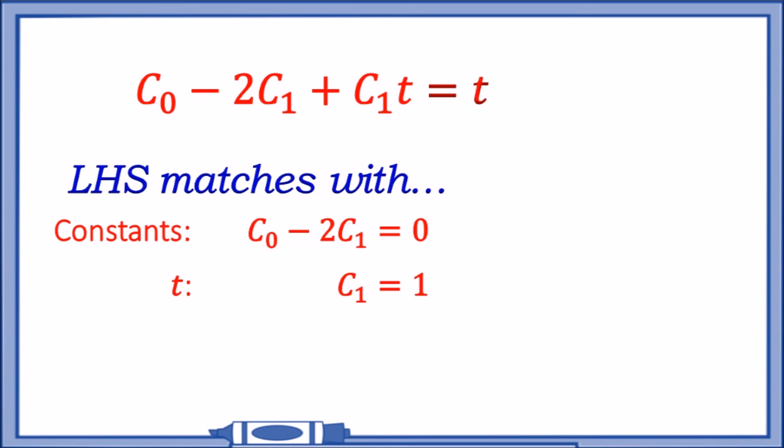Therefore we have our two sets of simultaneous equations: C₀ - 2C₁ = 0 and C₁ = 1. Solving this, we already know C₁ = 1. Substituting back to the first equation, it's going to yield C₀ = 2.